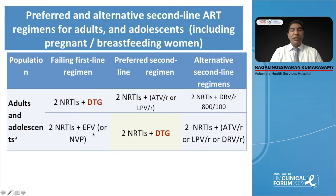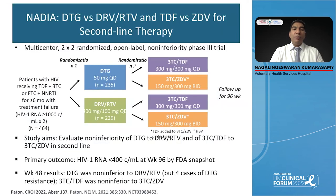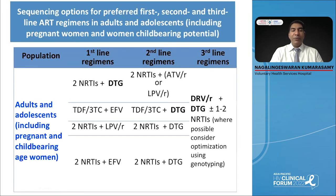Can we change patients already on efavirenz to dolutegravir-containing therapy? If you are doing viral load testing you can definitely do that, and even if you don't, the NADIA study — carried out on patients failing NNRTI-containing therapy where they recycled tenofovir for second line along with dolutegravir — very clearly shows it suppresses viral load. Thereby, even if someone is on efavirenz-containing therapy, it is better to do a viral load and switch, or if you do not have viral load, change for programmatic ease in your countries.